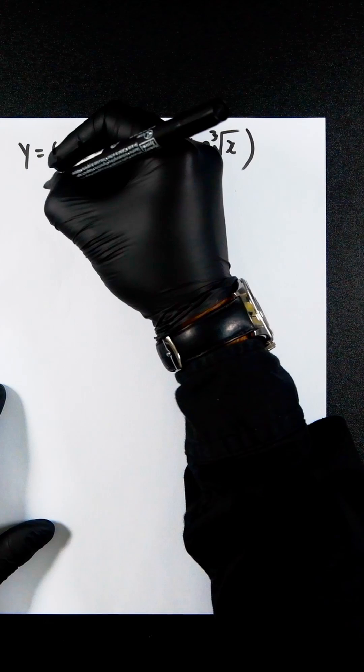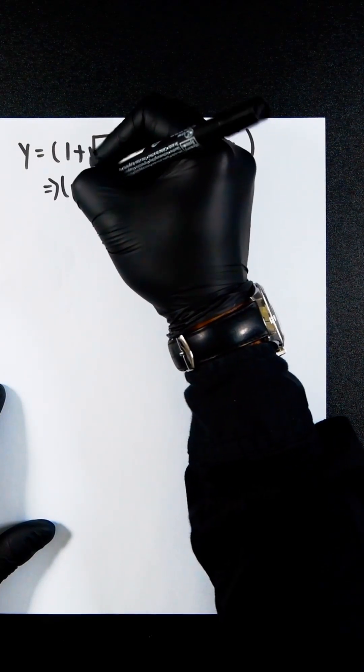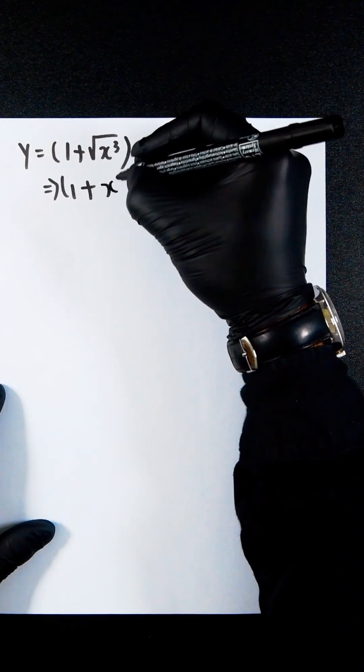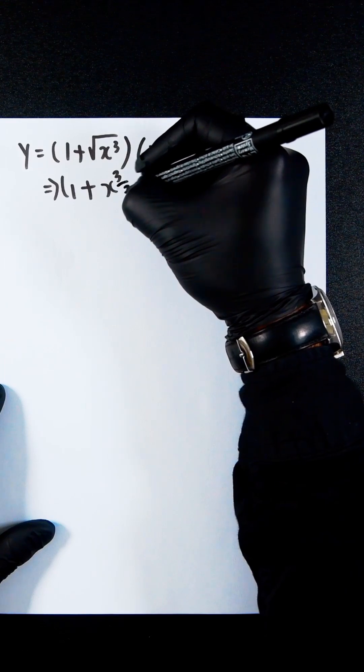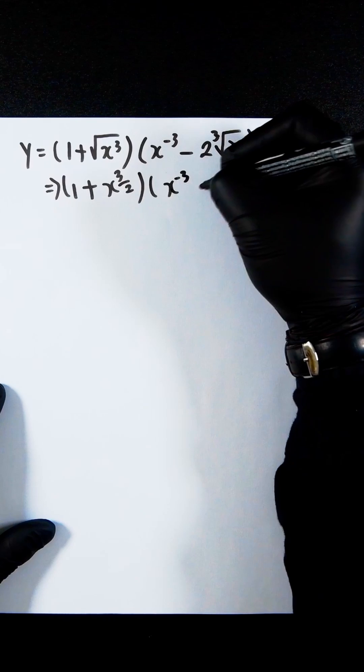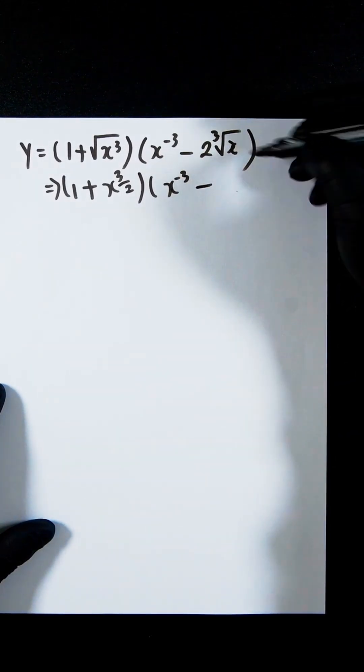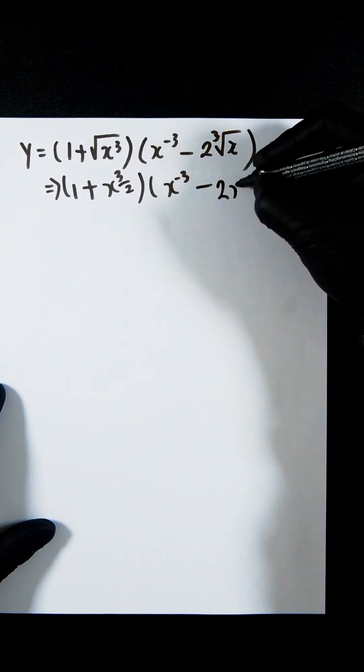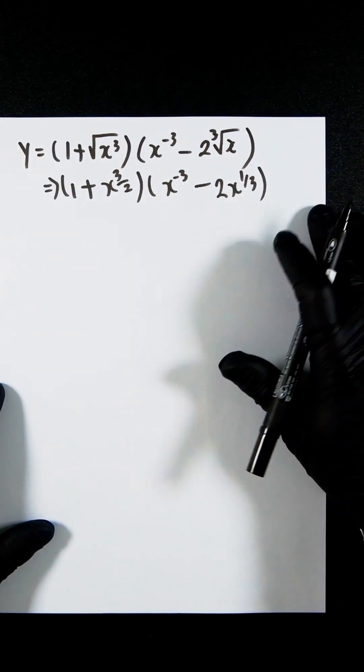So this can be rewritten as 1 plus x to the 3 over 2. This x to the minus 3 is fine, and this would be represented as 2x to the power of a third.